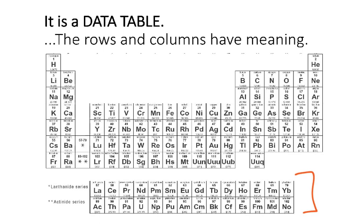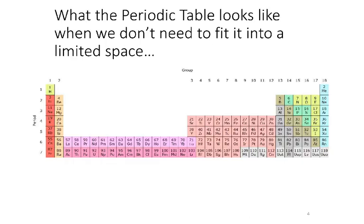What the heck are they doing down there? One of the reasons I love this particular periodic table is because it has these little asterisks that show you that elements 57 through 70 slot right up in here, and elements 89 through 102, which are shown down here, go along in here. So the periodic table actually looks like this when we don't need to fit it into a limited amount of space. But I don't know what size printer you need for that, so we're going to use a more typical one.